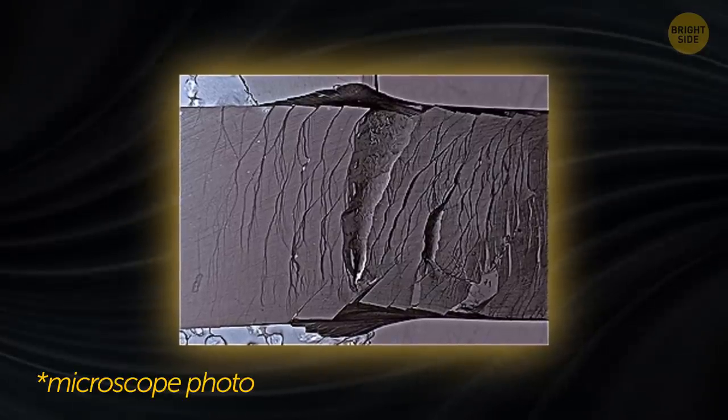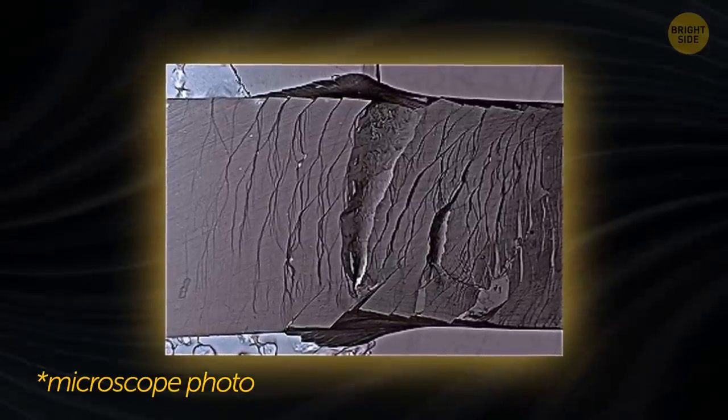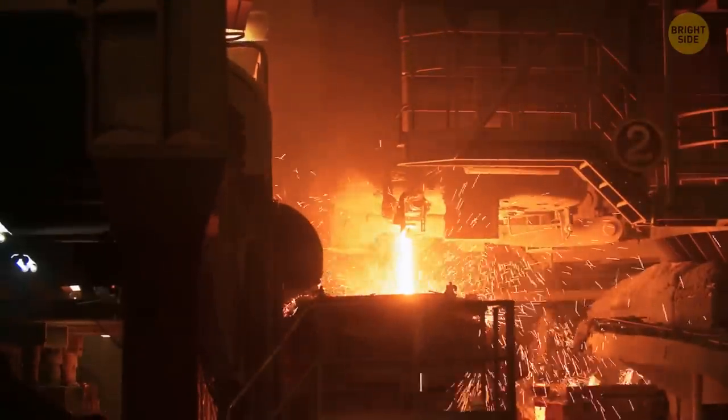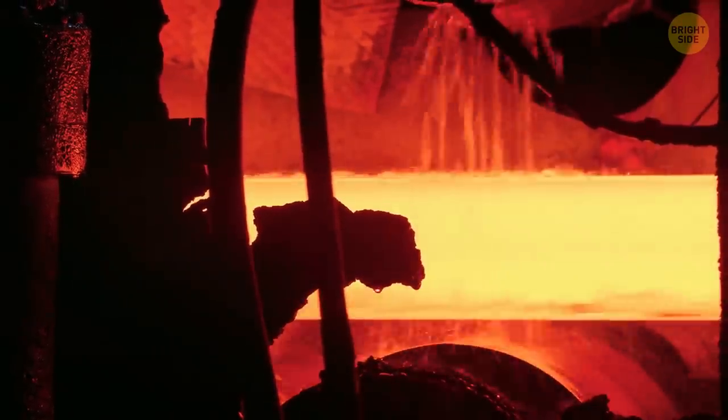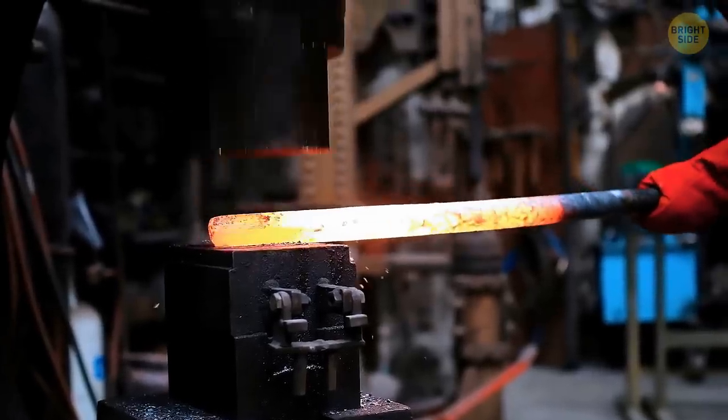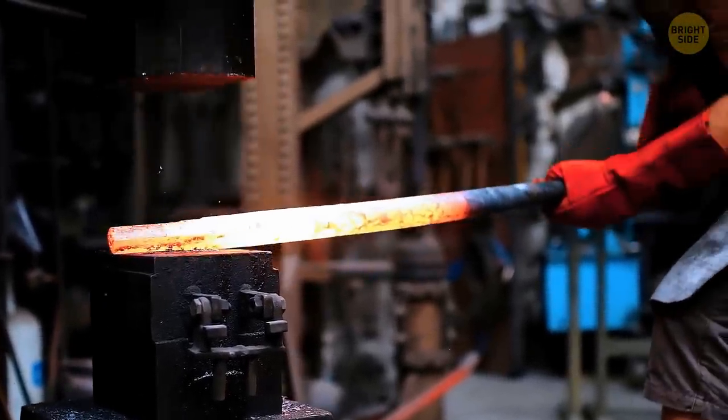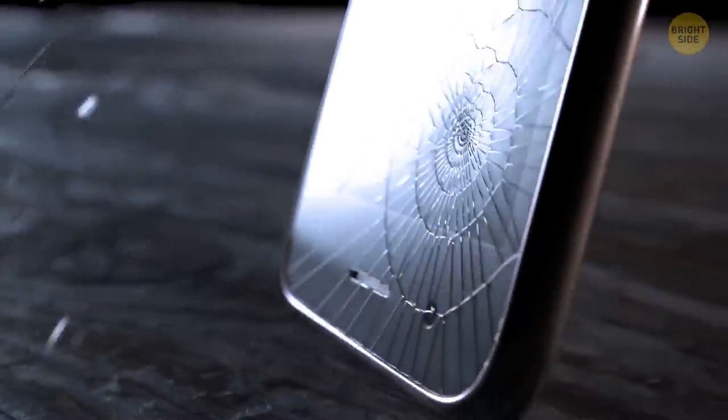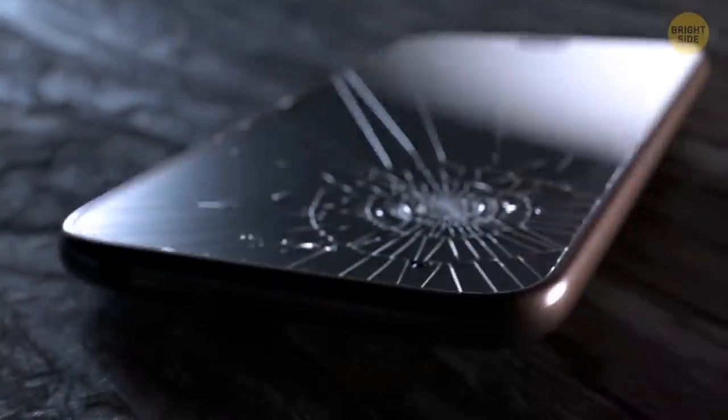Now here's something called palladium microalloy glass. As we said before, there are two very important features all materials have. The first one is strength. That's how much force some material can withstand before you manage to deform it. The second one is toughness. This stands for how much energy you need to fracture or break it.